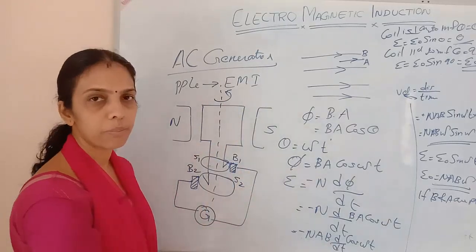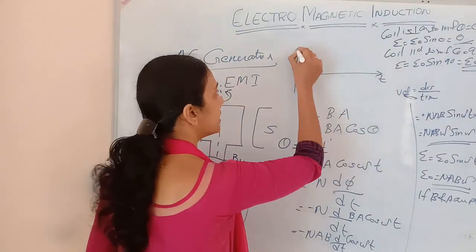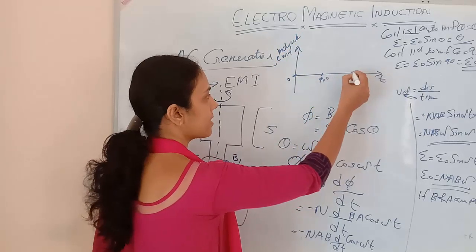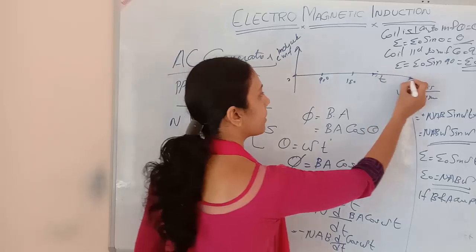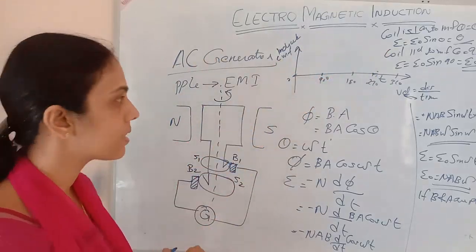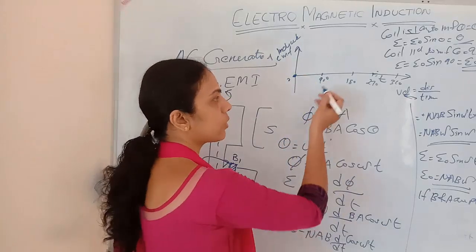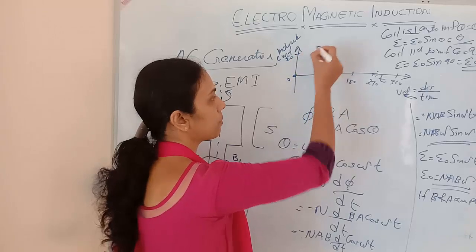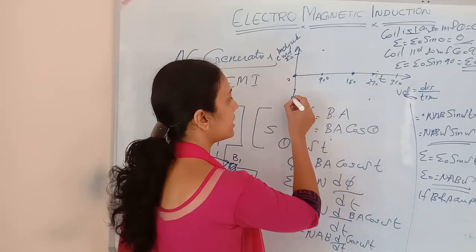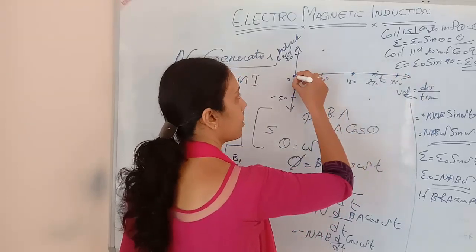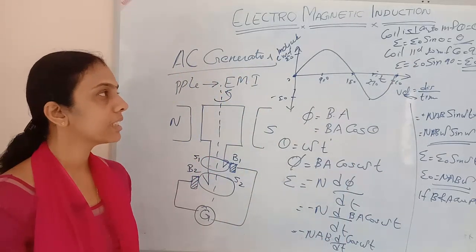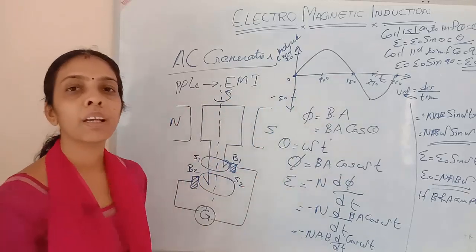So the output alternates. If I draw a graph with time on the x-axis and induced EMF on the y-axis: at θ = 0° the EMF is 0; at θ = 90° it reaches maximum E₀; at θ = 180° it is 0 again; at θ = 270° it reaches −E₀ (negative maximum); and at θ = 360° it returns to 0. This gives a sinusoidal waveform — that is how we get the alternating current output.